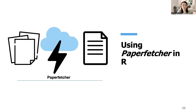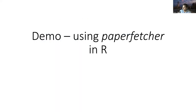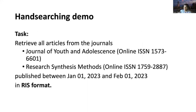Now Akash will introduce PaperFetcher in R. Let's do a quick demo of PaperFetcher in R. We are going to go through a quick example of hand searching using PaperFetcher. We're going to retrieve the metadata of all articles from two journals — the Journal of Youth and Adolescence and Research Synthesis Methods — published between January 1st and February 1st, 2023. We're going to retrieve this metadata in the RIS format, which is easy to import into citation management tools such as Zotero and systematic review screening tools such as Covidence.